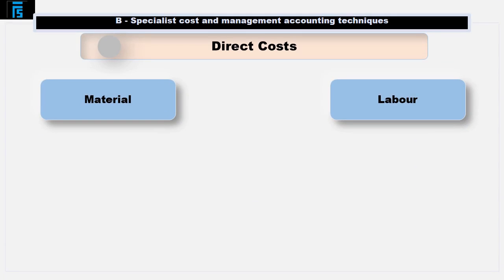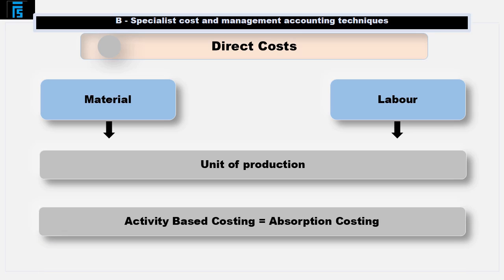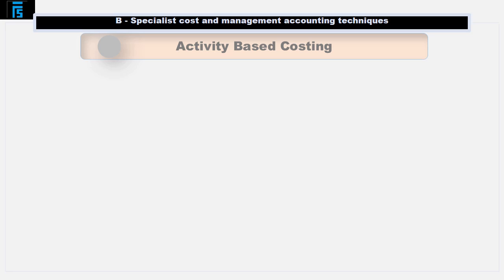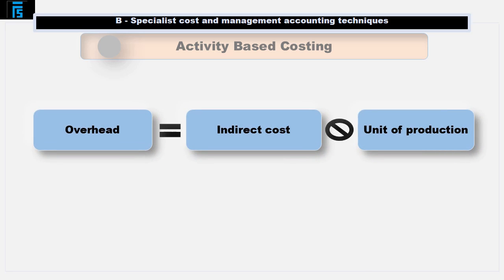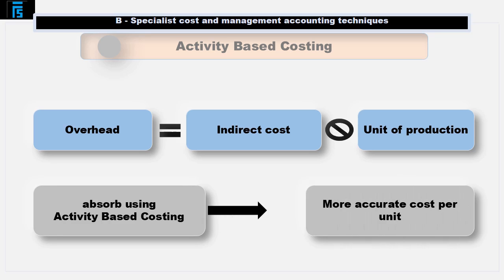Material and labour are direct costs. We can link these costs to each individual unit of production, and there is no difference in how we treat direct costs under absorption costing and activity based costing. So the material cost of $50 per unit and the labour cost of $40 per unit for Product P are the same under both methods. However, under activity based costing, the overhead cost per unit will differ, resulting in a more accurate reflection of the overhead attributable to each product and thus a more accurate product cost.